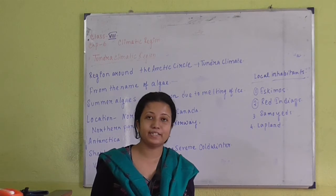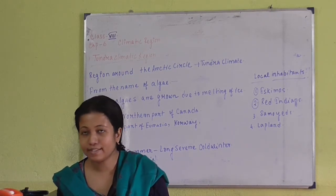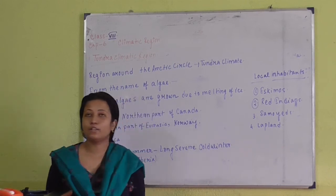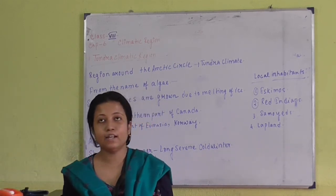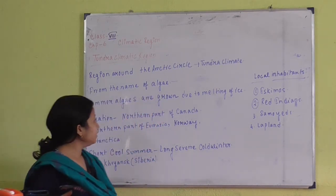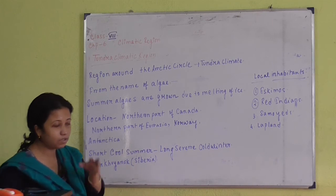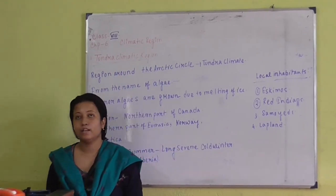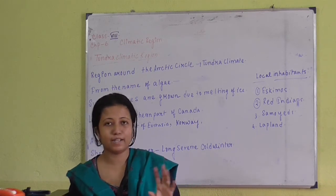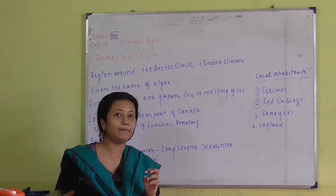The next climatic region is the Tundra climate. The name Tundra is named after an algae that grows when snow melts during summer months. We generally do not find much vegetation there because of the short summer and long intensive winter. The region is in the freezing zone and remains covered with snow for 8 to 9 months of the year. It is located in the northern parts of Canada, parts of Eurasia, Norway, and in the southern hemisphere, Antarctica and regions near the poles. When snow melts, algae, moss, and lichens grow, after which it remains covered with snow again — this is called the permafrost region.